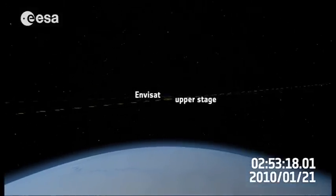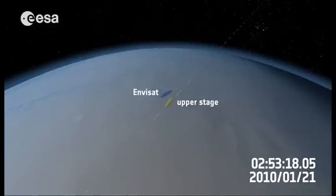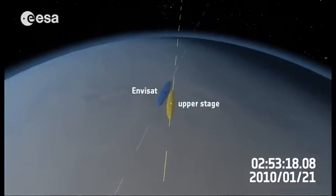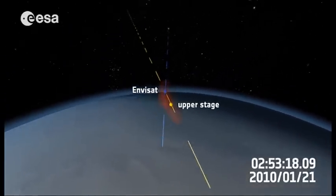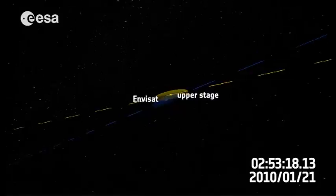A particularly critical situation occurred on 21 January 2010. The calculated fly-by distance to a disused rocket upper stage was only about 50 meters. The probability of a collision was greater than 1 to 80.